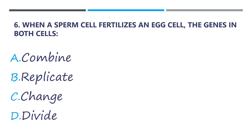Number 6. When a sperm cell fertilizes an egg cell, the genes in both cells are blank. A. Combine. B. Replicate. C. Change. Letter D. Divide.